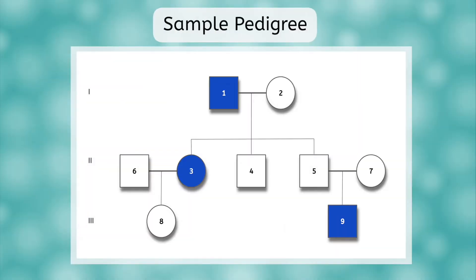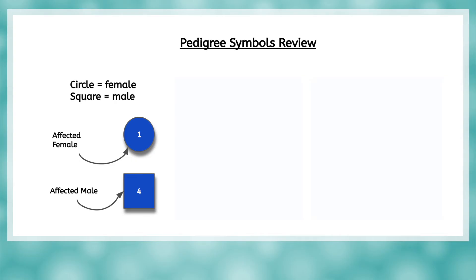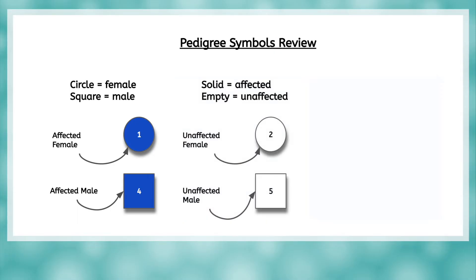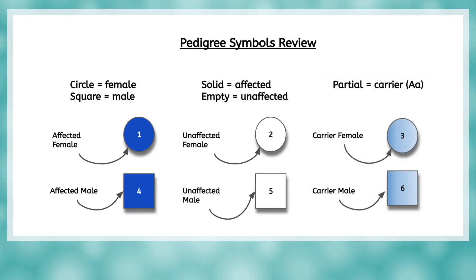Before we start analyzing a pedigree, let's make sure you remember the symbols and what they mean. Circles represent females, while squares represent males. These shapes are filled in, implying that the individuals had whichever trait we are studying. They are referred to as affected males or females. Empty circles and squares represent unaffected individuals who do not show the trait. Sometimes we also indicate with partial shading which individuals on the pedigree are carriers.